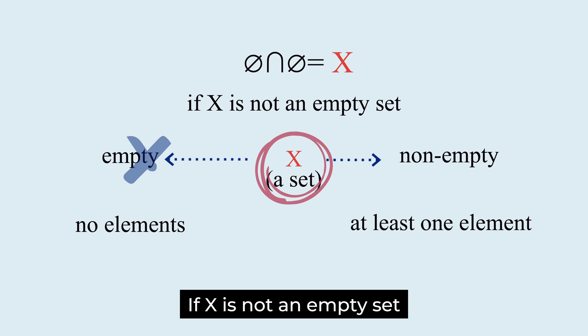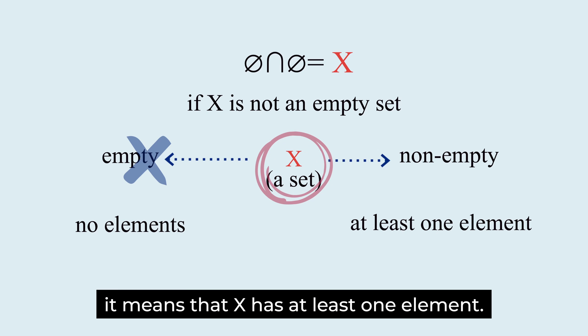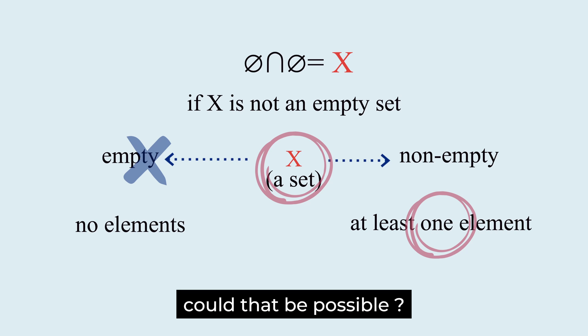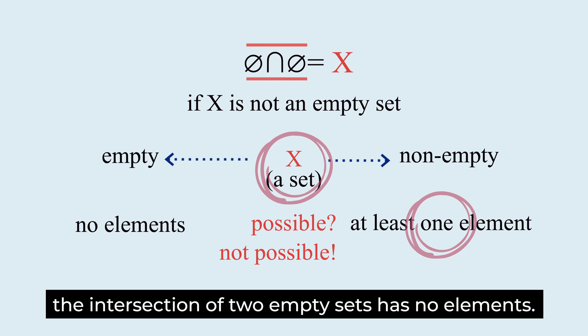If X is not an empty set, it means that X has at least one element. Could that be possible? That can't be possible. The intersection of two empty sets has no elements.